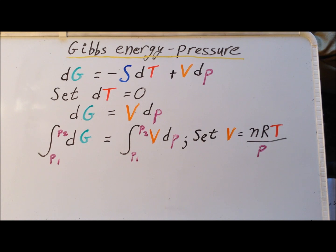Next, we assume ideal gas behavior, so therefore, we can replace the volume V here by the expression nRT divided by P.